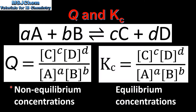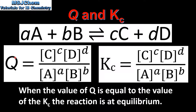The difference between the two is that when you calculate the reaction quotient Q you use non-equilibrium concentrations of the reactants and products, and when you calculate the equilibrium constant Kc you use equilibrium concentrations. When the value of Q is equal to the value of Kc, the reaction is at equilibrium.